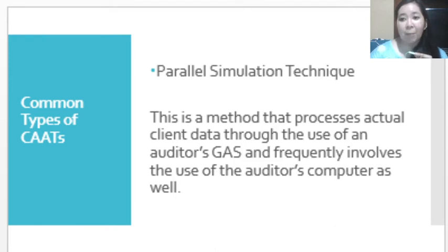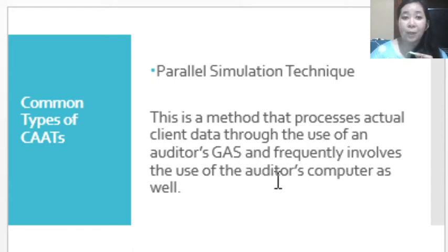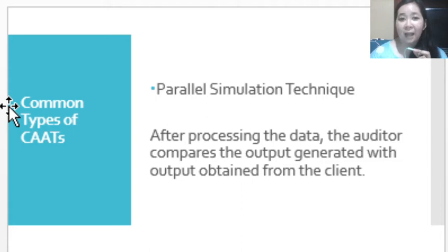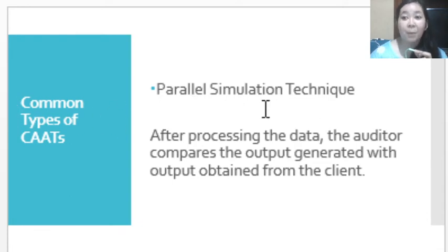Another type of CAAT is the parallel simulation technique. This method processes the actual client data — the auditor no longer uses dummy data. The client's data is used through GAS and frequently involves the use of the auditor's computer as well. After processing the data, the auditor compares the output generated with the output obtained from the client. The auditor processes the transaction in his own computer using this CAAT and compares the result with the output created by the entity to determine if they are similar.